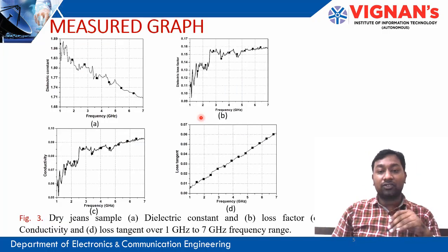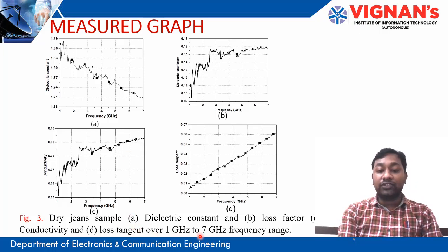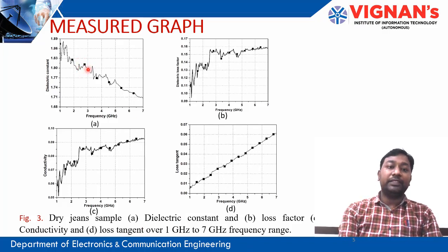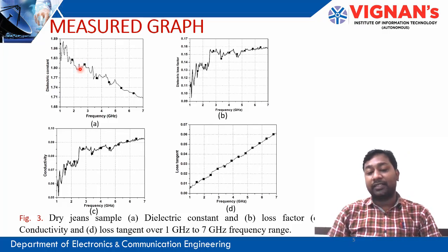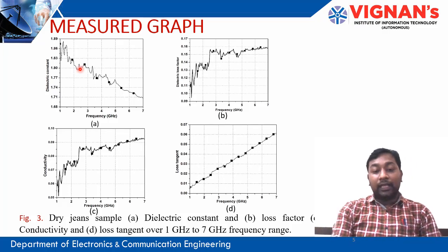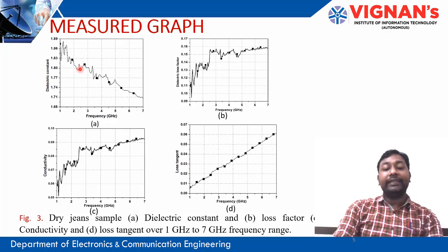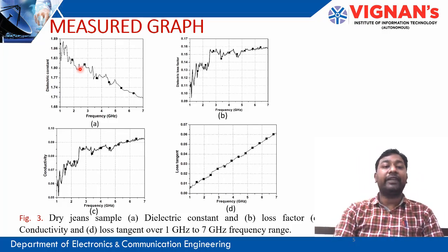We measured the dielectric constant, loss factor, conductivity, and loss tensor across a 1 to 7 GHz frequency range. We found that the dielectric constant is approximately 1.77 in our recorded frequency range — specifically 1.7754 at 2.45 GHz. Based on these measured properties, we designed the antenna at 2.45 GHz.